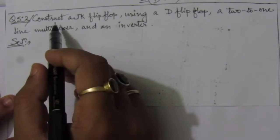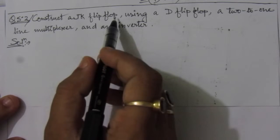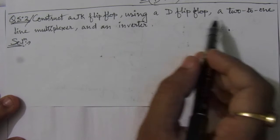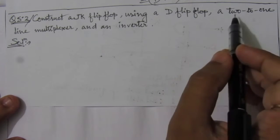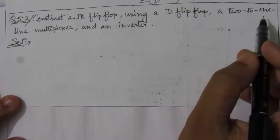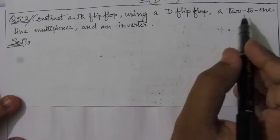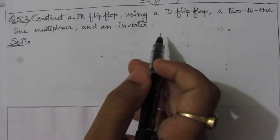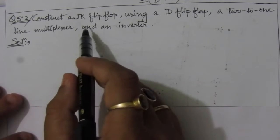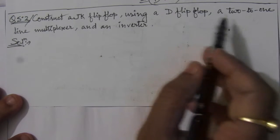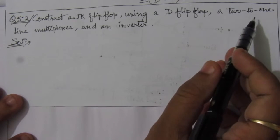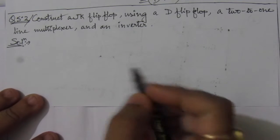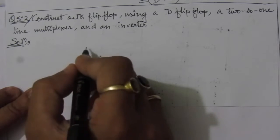The problem is to construct a JK flip-flop — that is, we have to design a JK flip-flop circuit using a D flip-flop. We can use one D flip-flop and a 2-to-1 line multiplexer, or we can use one D flip-flop and an inverter. So we have to design a JK flip-flop using one D flip-flop, one 2-to-1 line multiplexer, and one inverter.